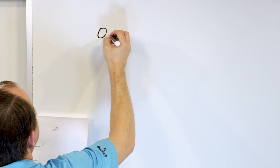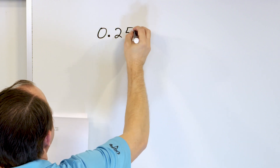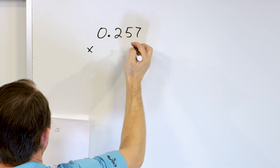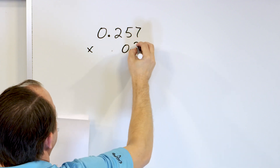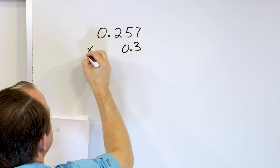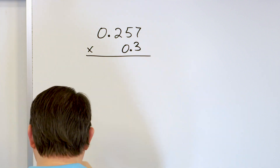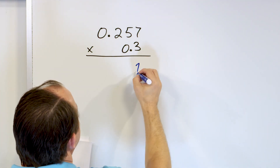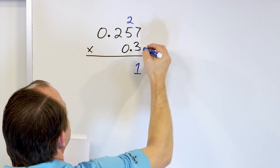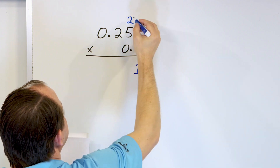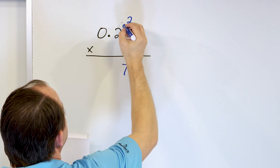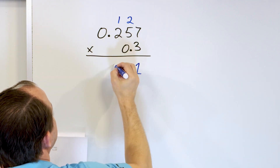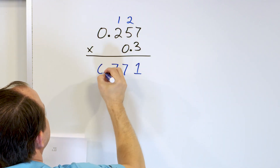Let's take a look at 0.257, and we're going to multiply that by 0.3. Notice I line up the numbers — I do not line up the decimal points. So we multiply: 3 times 7 is 21, carry the 2. 3 times 5 is 15, plus 2 is 17, carry the 1. 3 times 2 is 6, plus 1 more is 7. 3 times 0 is 0.